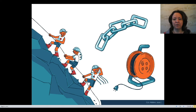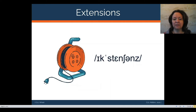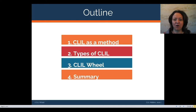In my talk, I'd like you to think about three ideas represented by three pictures: connections — where you find links between what I'm saying and what you already know about CLIL or language education; extensions — where I hope to broaden your understanding of CLIL; and challenges — where I hope to challenge some of your views. The outline covers CLIL as a method, types of CLIL, and then the main focus: the CLIL wheel, followed by a short summary.